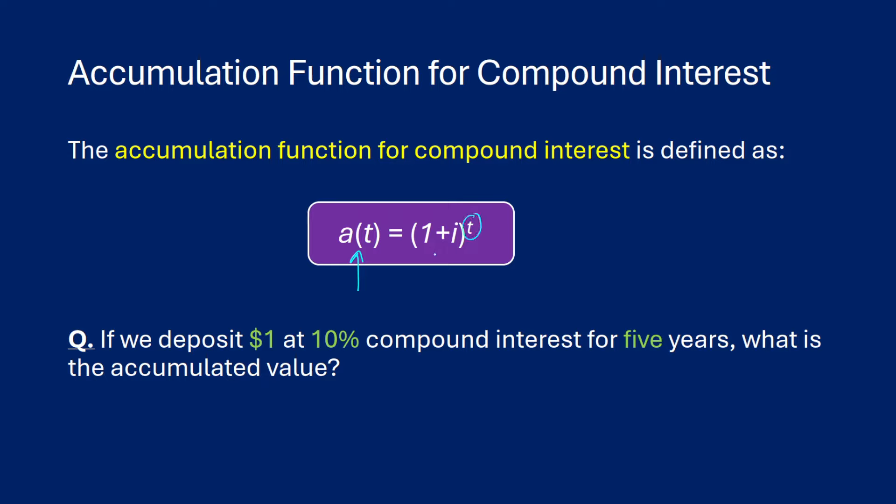What this means is that every single time you hit a new period, your accumulated value will be multiplied by the interest rate again, and the whole thing will increase at a much faster rate than simple interest.